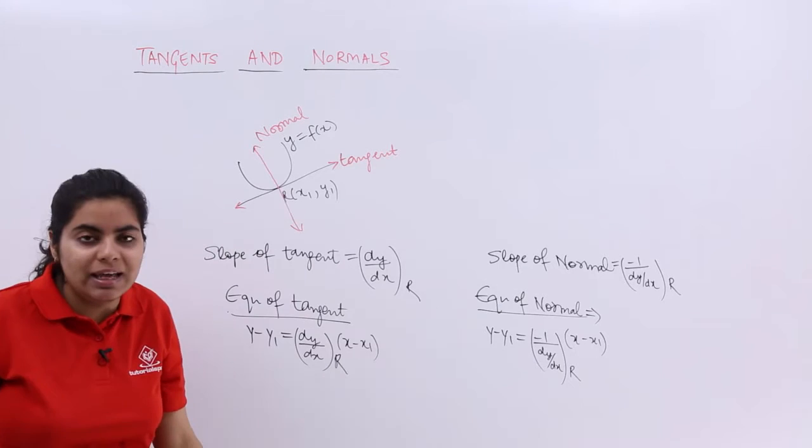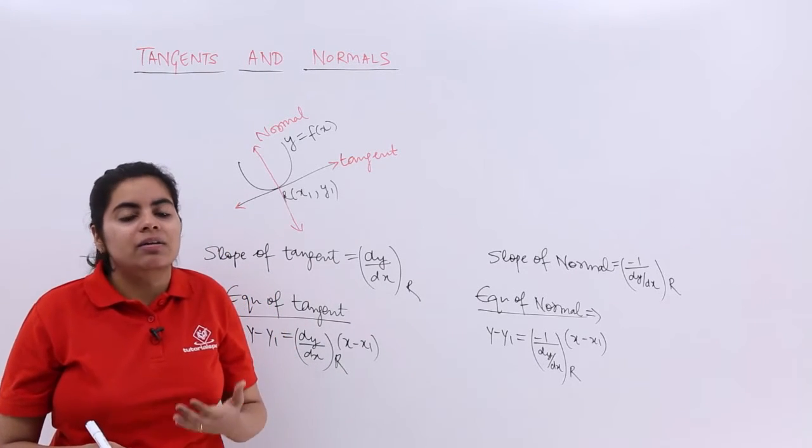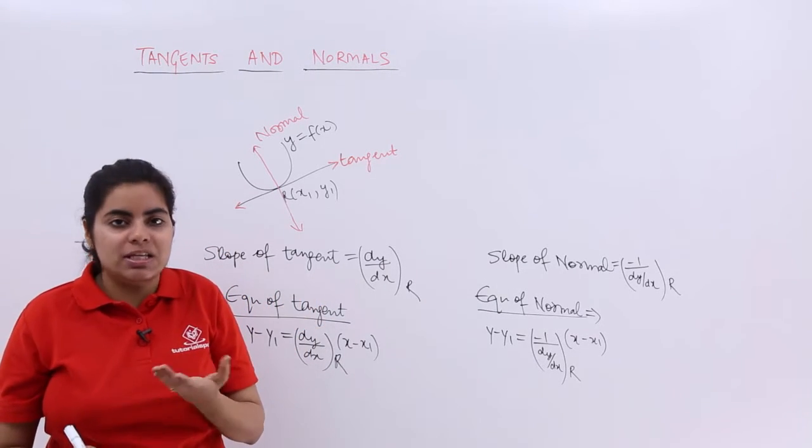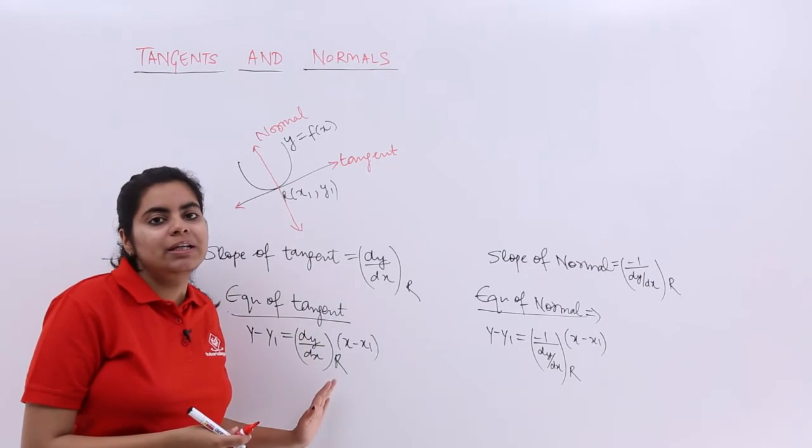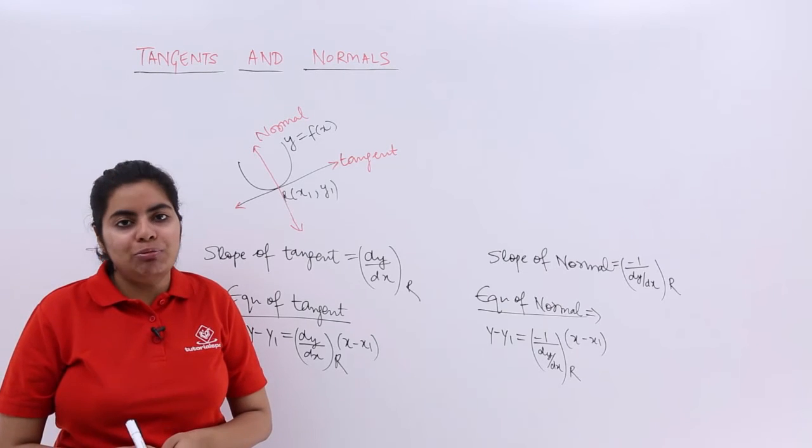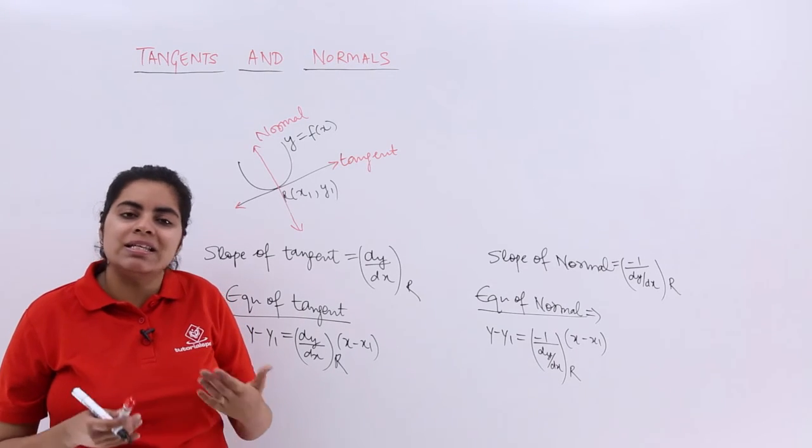These two equations are important and now some conditions may be there like the line or the tangent is parallel to the x-axis. Then definitely the slope has to be 0, or perpendicular to x-axis means parallel to y-axis and so on.